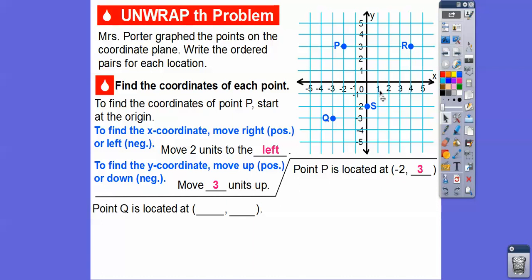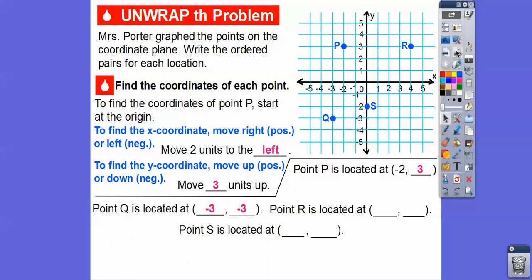Point Q: we go to the left and then down — both are negative. So it's negative three for the x-coordinate, and negative three for the y-coordinate. For point R, we go positive four to the right and then up three, so R is at (4, 3). Point S is straight down — we didn't go right or left, so the x-coordinate is zero, and since we went down two, the y-coordinate is negative two, giving us (0, -2).